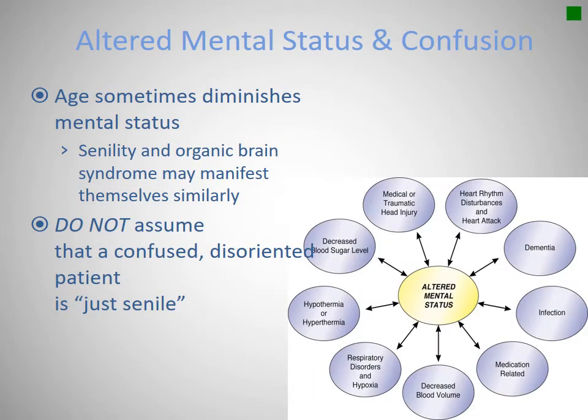Altered mental status and confusion — it's easy to assume an elderly person is confused because they are old and demented, but oftentimes that's not the case. We don't want to write patients off as senile without ruling out other extrinsic and intrinsic causes. There are many causes of altered mental status, from traumatic head injuries to decreased blood sugar levels to hypothermia to hypoxia. Go down through your checklist and check off all these things before attributing it to dementia or senility.